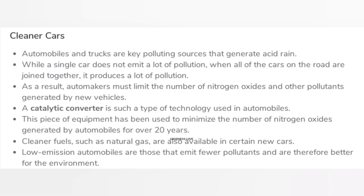Cleaner cars: automobiles and trucks are key polluting sources that generate acid rain. While a single car does not emit a lot of pollution, when all of the cars on the road are joined together, it produces a lot of pollution. As a result, automakers must limit the number of nitrogen oxides and other pollutants generated by new vehicles. A catalytic converter is such a type of technology used in automobiles. This piece of equipment has been used to minimize the number of nitrogen oxides generated by automobiles for over 20 years.